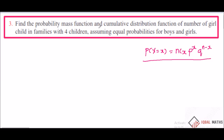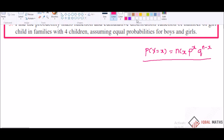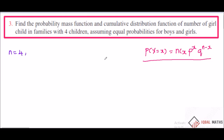Find the probability mass function and cumulative distribution function of the number of girls in a family with four children. If n is equal to 4, assuming equal probabilities for boys and girls — equal 50%. So p equals 50 by 100, which is 1 by 2. Probability for boy is 1 by 2, probability for girl is 1 by 2.